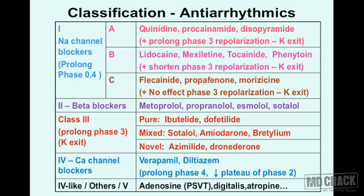Class 2 are beta blockers, affecting all phases of the action potential. You already know the examples: metoprolol, propranolol, esmolol, and sotalol. Esmolol is an ultra-short-acting agent.